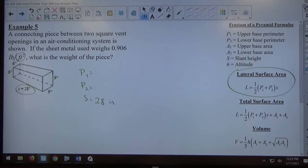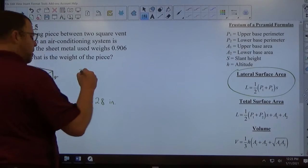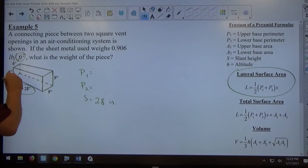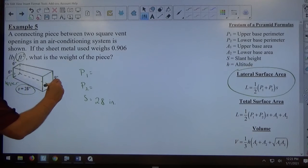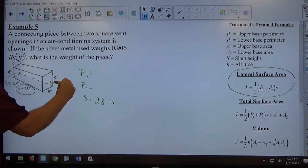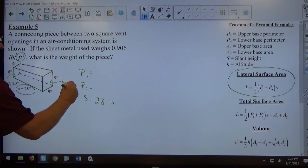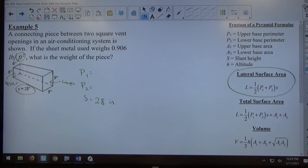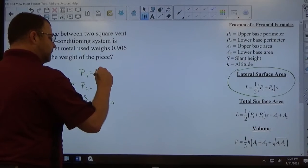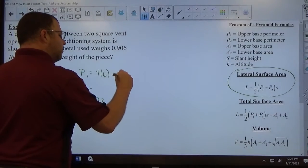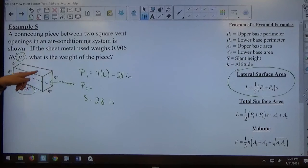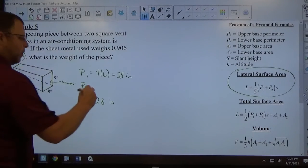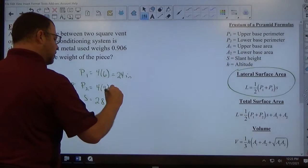Slant height is given to be 28 inches. The perimeter of both the top and bottom face there, the 6 inch square and the 9 inch square are squares. I'm going to call this the upper and this the lower. The upper perimeter is going to be 4 times 6 inches, which is a total of 24 inches. The lower base is a 9 inch square, so it's going to be 4 times 9 inches, which is 36 inches.